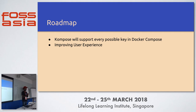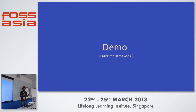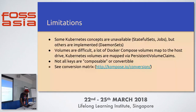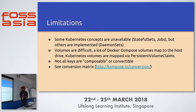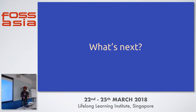On the roadmap, we're trying to support as many keys as possible. But before that, I want to mention some limitations of Compose — because Docker Compose was initially made for local development or Docker Swarm, there are limitations: you cannot create StatefulSet jobs, and volumes are difficult to create. You can check the conversion matrix on our website under the conversion page, which shows which key maps to what. We learned some lessons from Compose that we cannot go 100% from Docker Compose to Kubernetes.